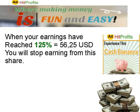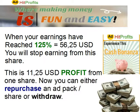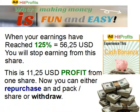When your earnings have reached 125%, that is $56.25, you will stop earning from this share. So this is $11.25 profit from one share. Now, we don't know how long it will take before one share is matured — when it reaches 125%. It could be some days, it could be two weeks, it could be even more. We don't know because it's all based on the revenues coming into Ad Hit Profits.